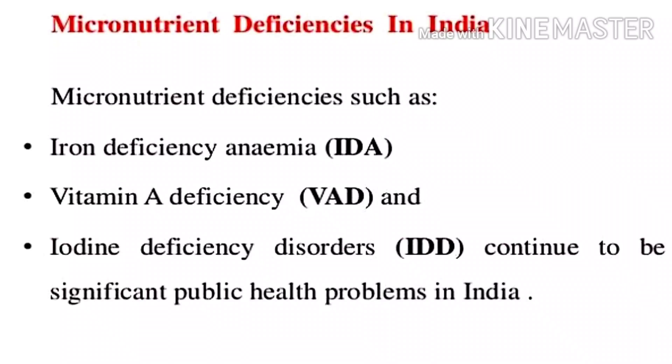In the Indian diet, micronutrient deficiencies are common. Iron deficiency causes anemia. Vitamin A deficiency is also one of the major diseases. These are key micronutrient deficiencies in India.